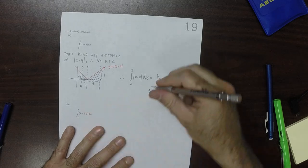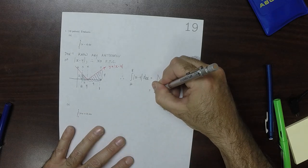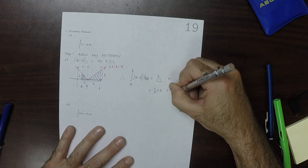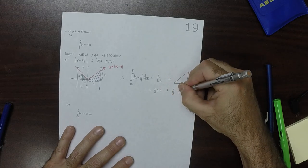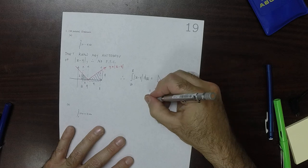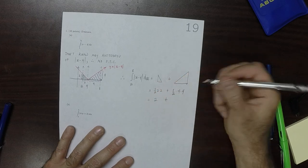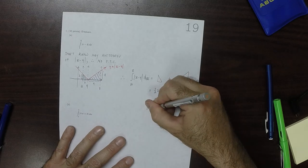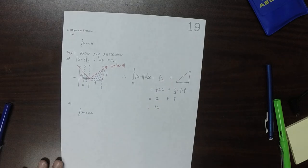Well, that's 1 half base height plus 1 half base height. So that's 2 plus 8, so 10. So the answer to part a is 10.